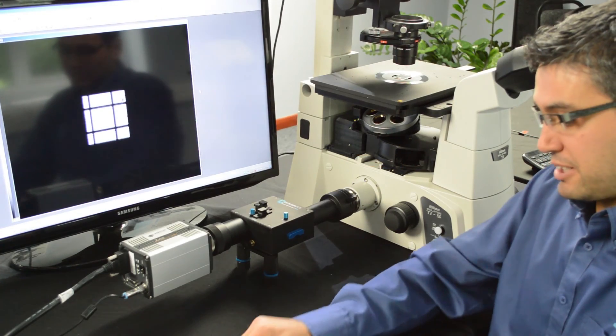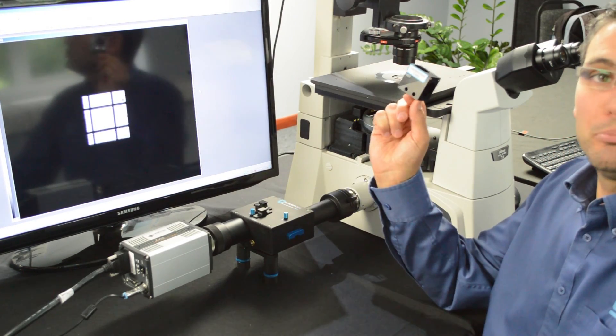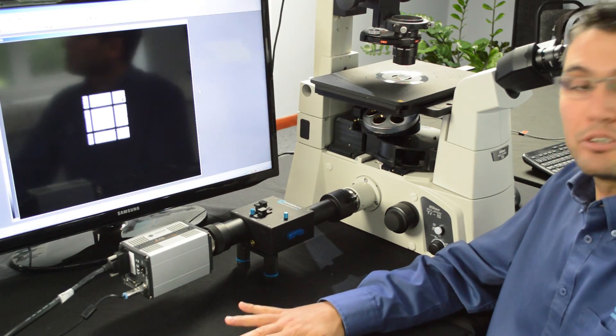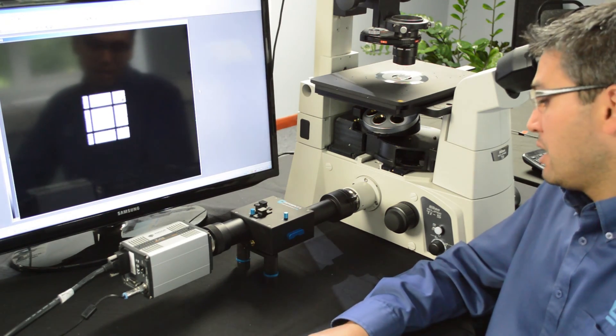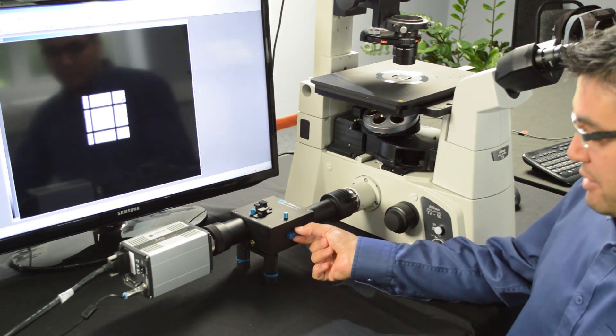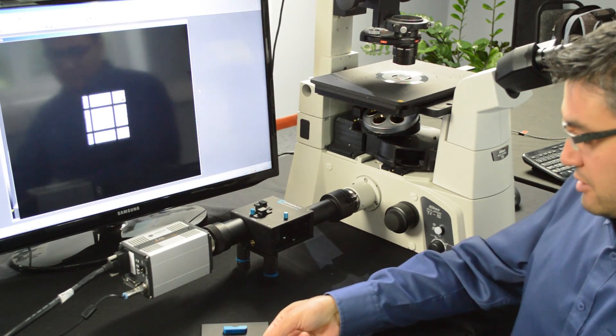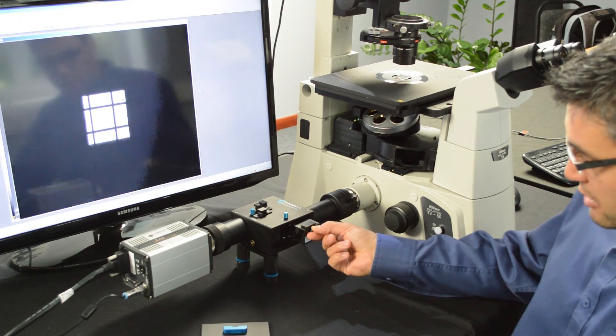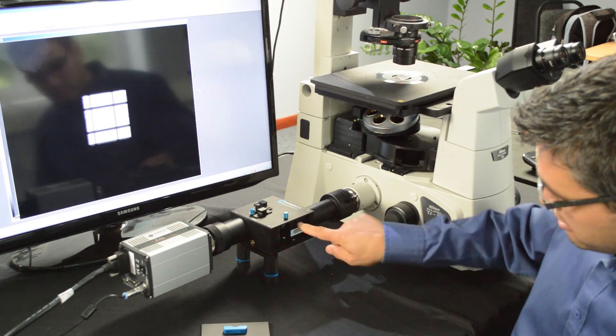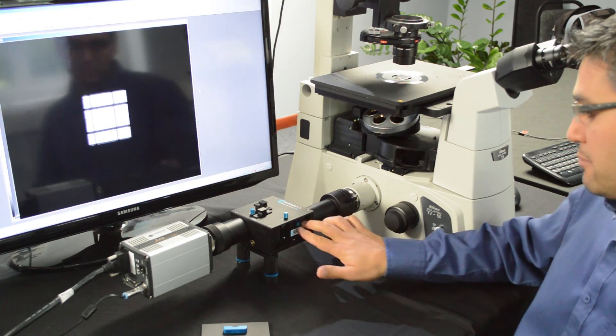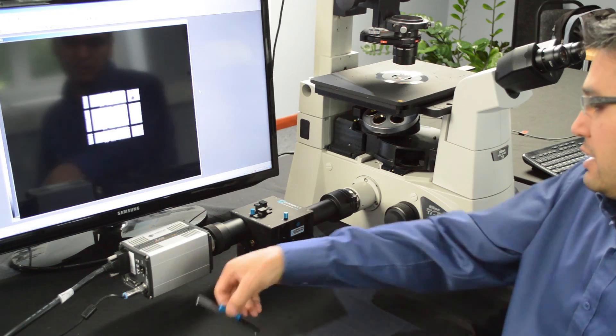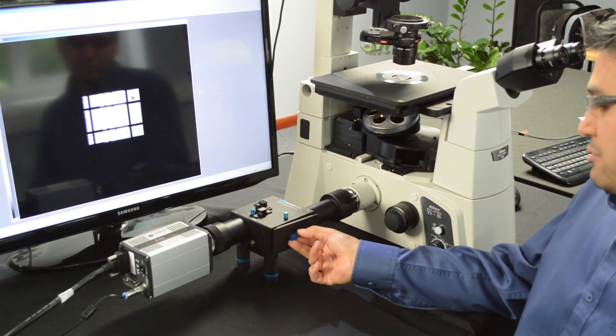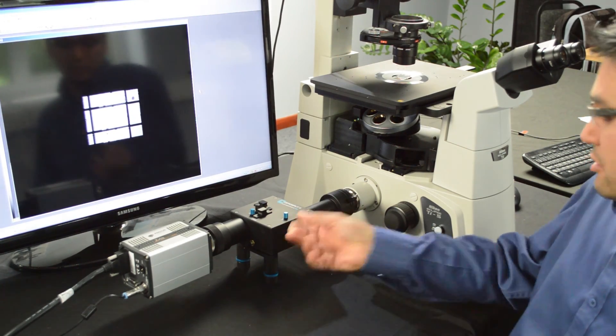So your OptiSplit comes with a calibration cube that's what we're going to be using to set up the system. Just open the cover, it's magnetic, just pull it and slot your calibration cube into the grooves. Make sure that it's nice and tight. Put the cover back so you don't have excessive light in your system.